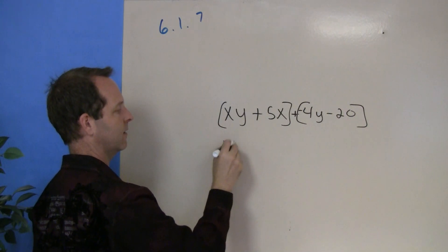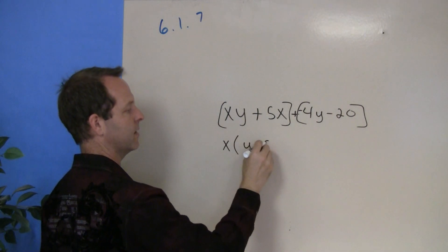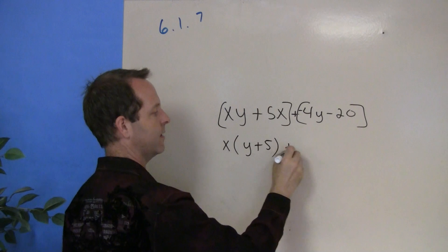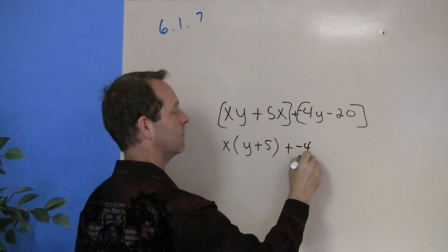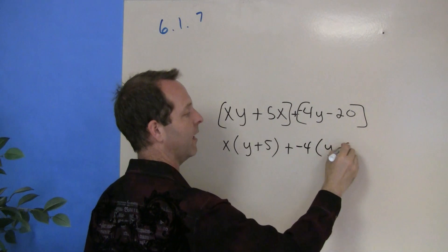Factor out of the first one an x and I'm left with a y plus a 5. Plus I'm going to factor out of this one a negative 4 and I'm left with a y plus a 5.